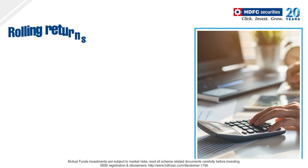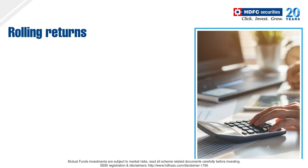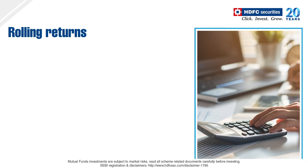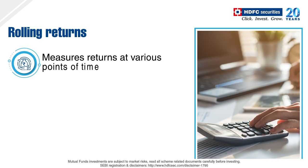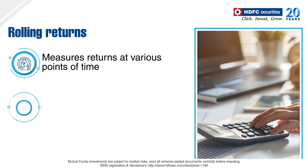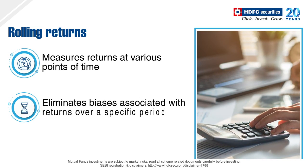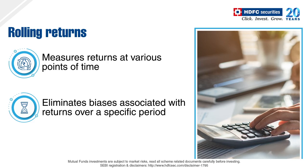Another way to pick a good mutual fund is to check out its rolling returns, which typically average out a series of returns over and above the overlapping periods. It also measures your mutual fund returns at various points of time, thus eliminating any bias associated with returns observed over a specific point of time.